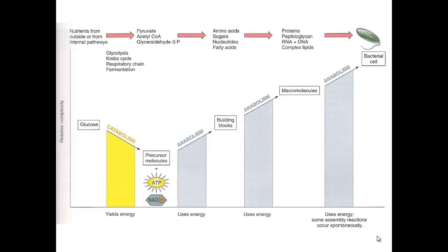If we look at our basic nutrient glucose — the nutrient that directly enters into glycolysis — if we break this down via catabolism, this will yield energy as well as precursor molecules. We also have energy and electrons through ATP and through NADH.